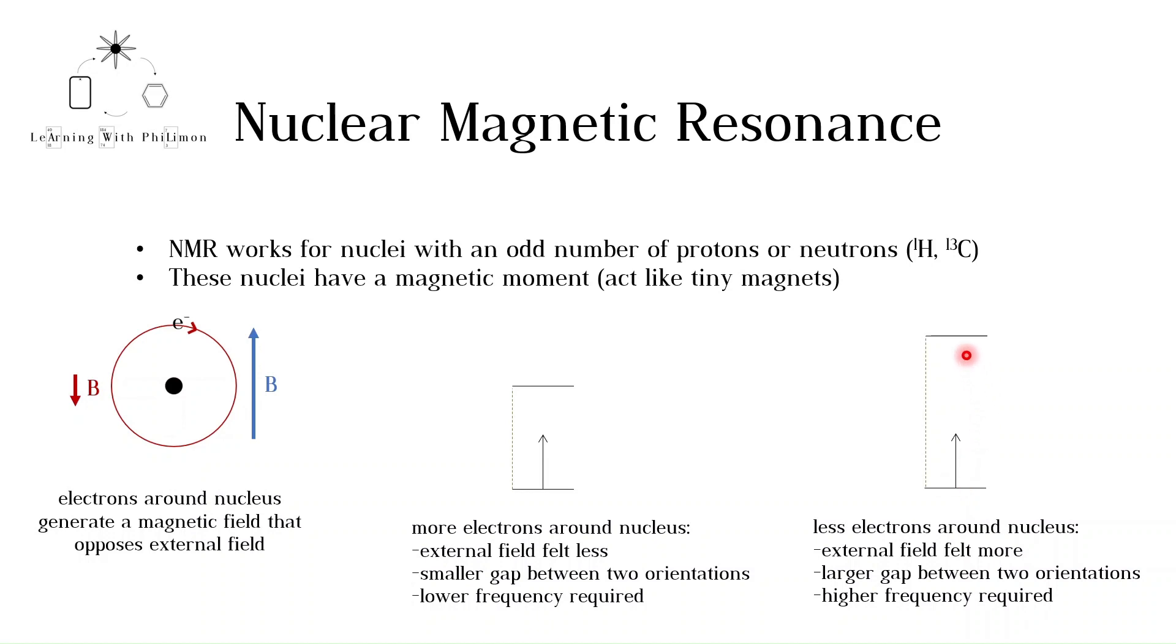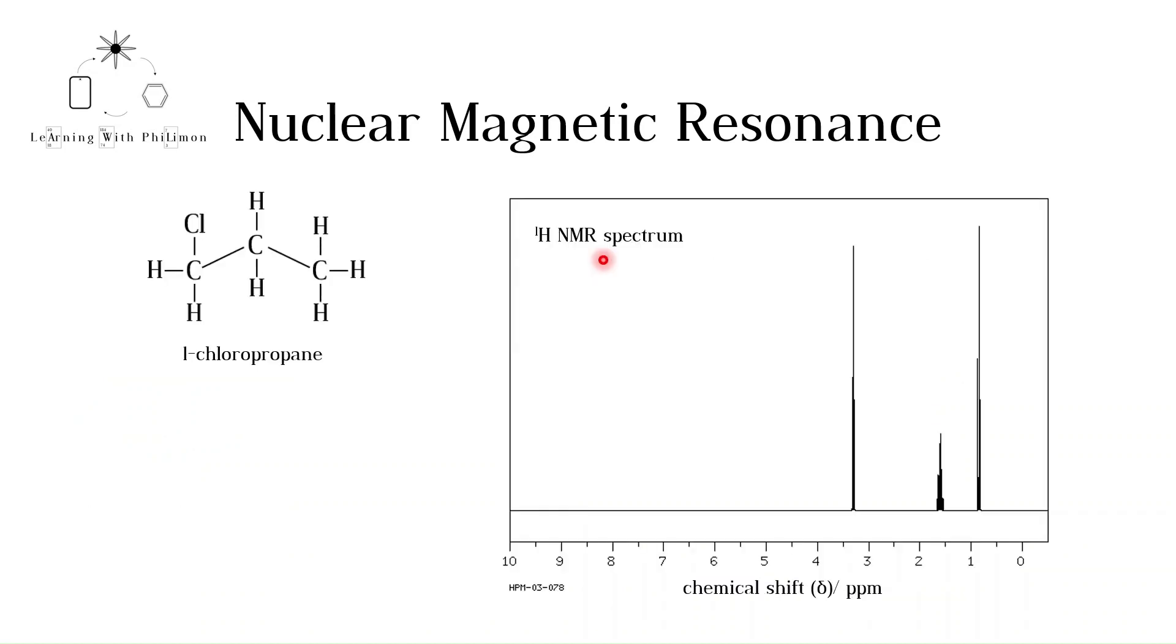This is the theory behind NMR. At IB and A level, it is much more important to be able to interpret spectra than explain the theory. Here we see the 1H NMR spectrum of 1-chloropropane. The x-axis shows the chemical shift in ppm (parts per million), which corresponds to the frequency of radio wave required to achieve resonance for a particular hydrogen nucleus. The higher the ppm, the higher the frequency required, and the lower the ppm, the lower the frequency.